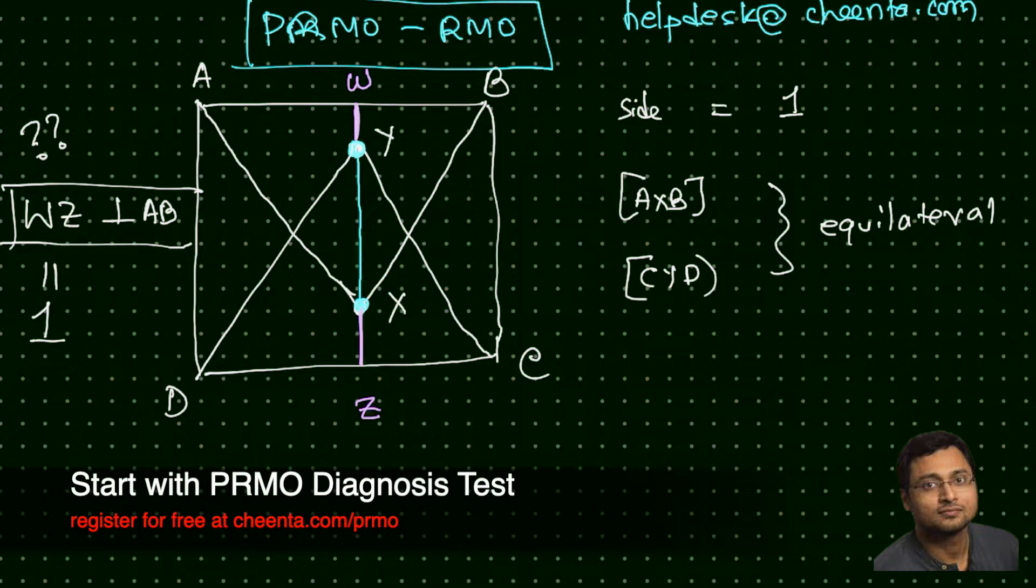Now notice that YZ is square root of 3 over 2. Why is that? Because it is the height of an equilateral triangle with side length 1. So if this side length is 1, then this will be half and you can apply Pythagoras theorem to find out the value of this quantity YZ. So YZ is square root of 3 over 2.